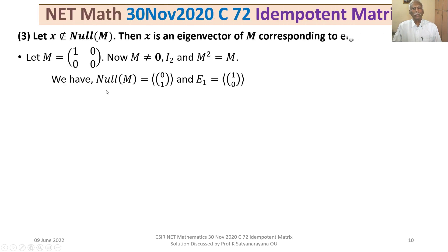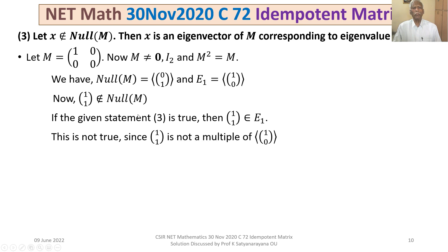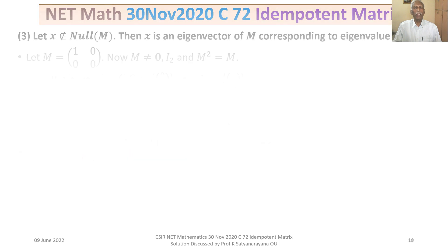Consider x = (1,1)ᵀ. Since (1,1)ᵀ is not a scalar multiple of (0,1)ᵀ, it does not belong to the null space of M. If Option 3 were true, then (1,1)ᵀ would have to belong to E₁. But E₁ is spanned by (1,0)ᵀ, and (1,1)ᵀ is not a multiple of (1,0)ᵀ. So (1,1)ᵀ does not belong to E₁. Therefore Option 3 is false.